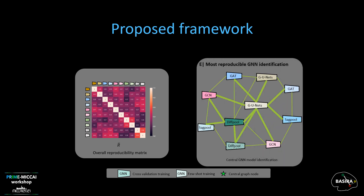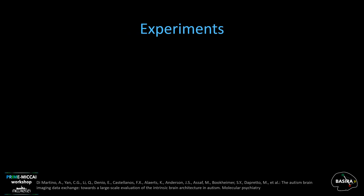To select the most reproducible GNN, we follow an approach inspired from graph theory. First, we rank the GNNs based on the node strength. Then, we identify the most reproducible model as the node having the greatest strength in the reproducibility graph.